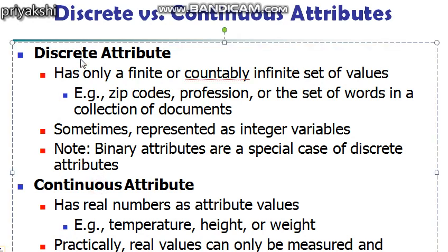A discrete attribute has a finite or countably infinite set of values. Such attributes can be categorical, such as zip code or ID numbers, or numeric, such as any count. Discrete attributes are often represented as integer variables.